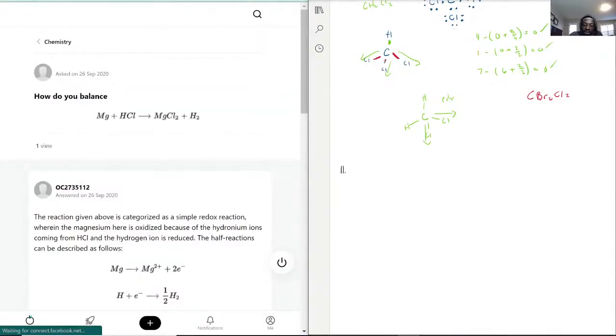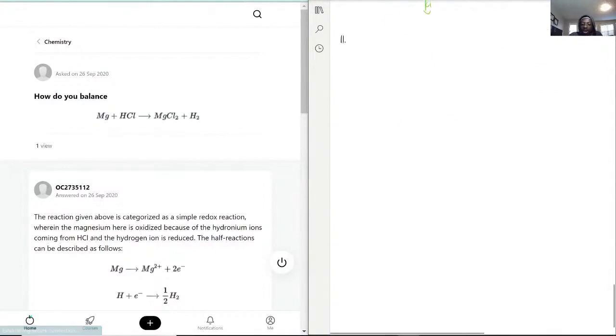The trickiest part, honestly, is differentiating between a polar bond and a polar molecule, because non-polar molecules can still have polar bonds, like CHCl₄.